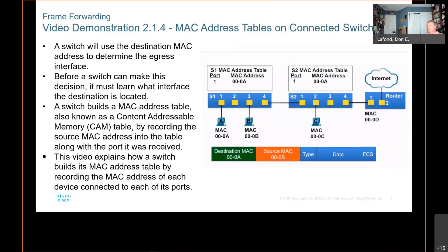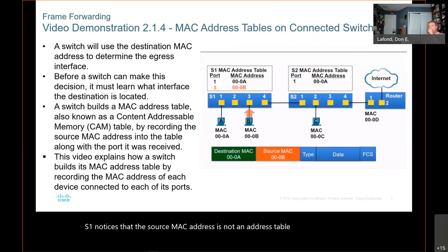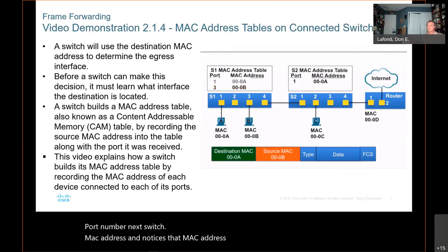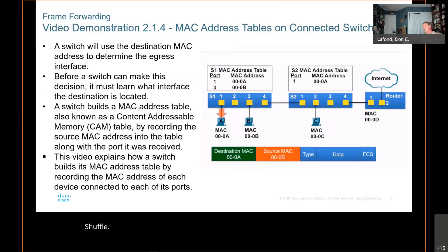Now let's have PCB send a message back to PCA. The source MAC address of the frame is 000B, and the destination MAC address is 000A. PCB sends it to switch S1. S1 notices the source MAC address is not in its MAC address table, so it adds the MAC address and the incoming port number. Next, S1 examines the destination MAC address and sends it out just port 1. PCA receives the Ethernet frame, examines the destination MAC address against its own, notices it is a match, and receives the rest of the frame.